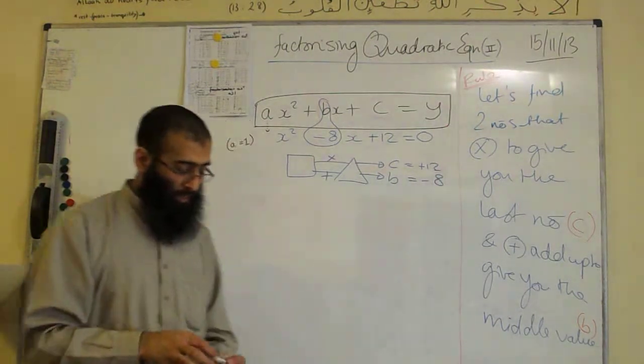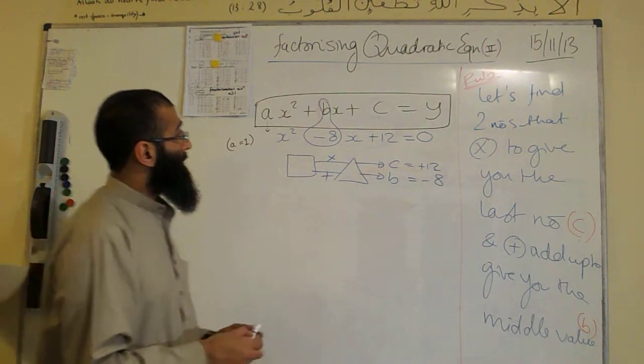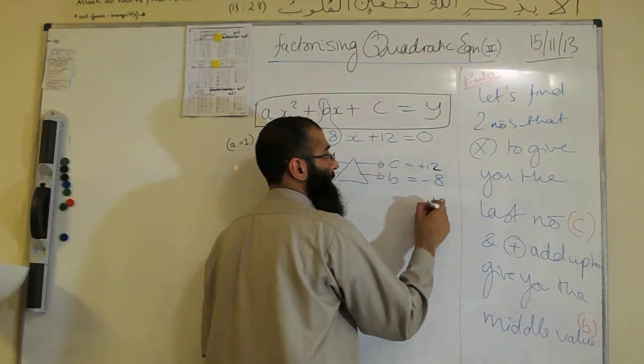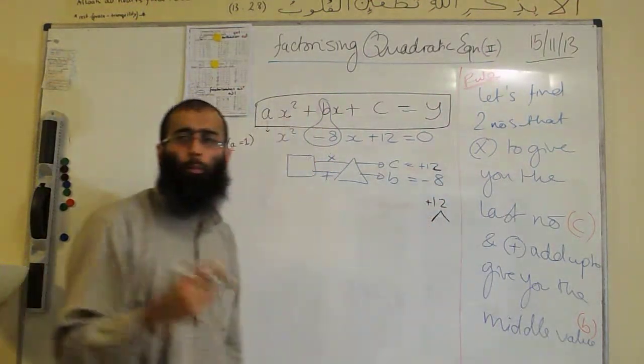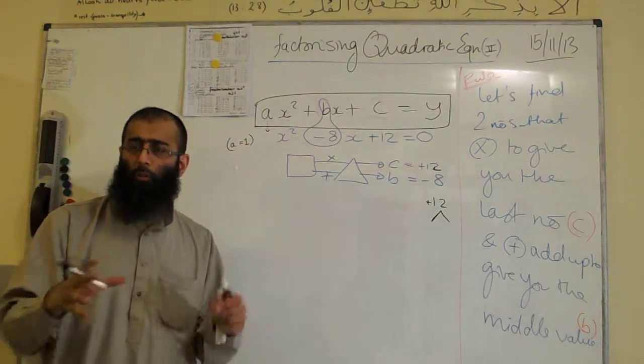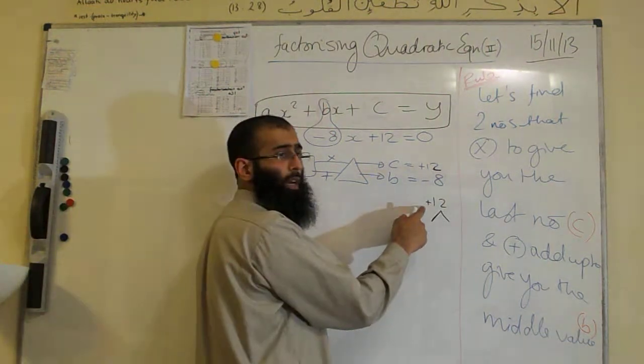So let's have a look. Now, how can we get a plus 12 and have a negative answer when you add them? That means both numbers must both be negative. So plus 12 can be made by minus 1 times by minus 12, because they want to give you a plus number.